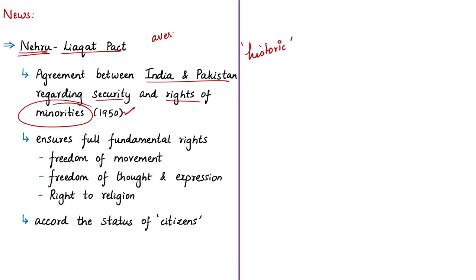The partition of 1947 resulted in communal riots, and by December 1949 trade between the two countries was cut off. In 1950, Hindus from East Pakistan (present-day Bangladesh) crossed into India, while Muslims from West Bengal went to East Pakistan, creating a violent atmosphere with lethal attacks on women and children. Many Hindus and Sikhs left Pakistan for India, prompting the two prime ministers to meet and sign an agreement to safeguard minority rights.